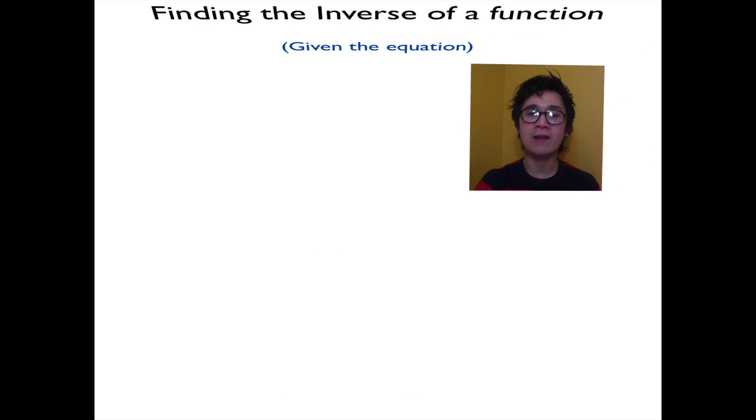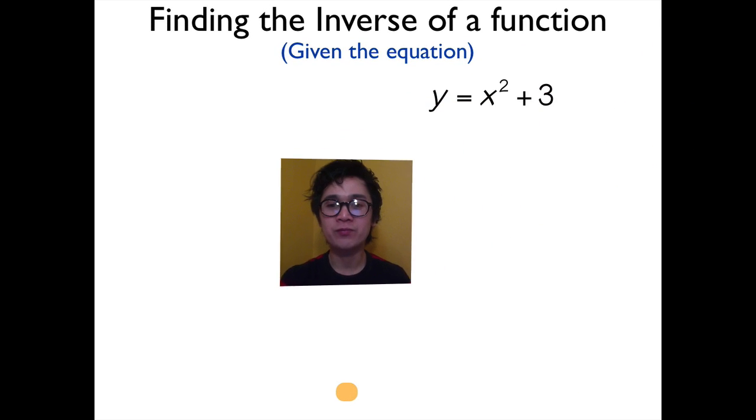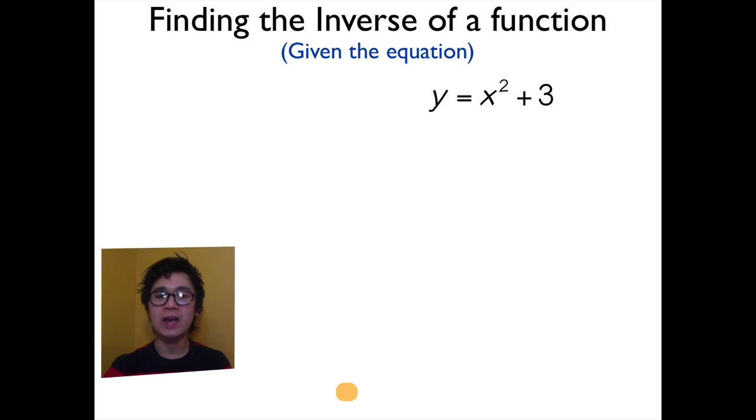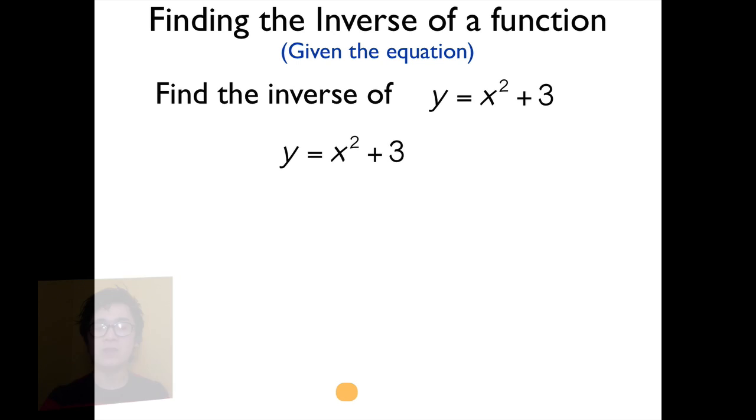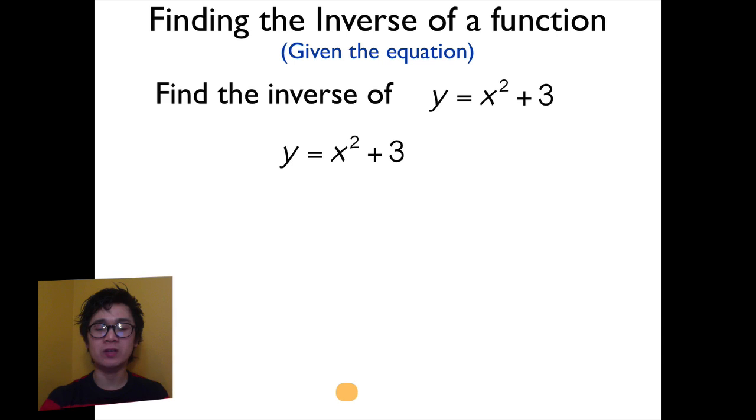Now what if we have a set of functions like y equals x squared plus 3? The first step in finding the inverse of this function is to simply interchange y and x. And by interchanging the value of x and y, our new equation will be x equals y squared plus 3.